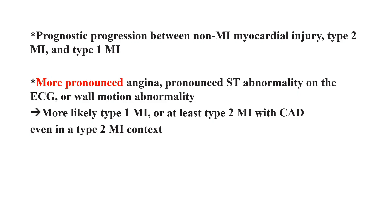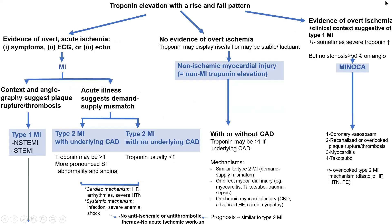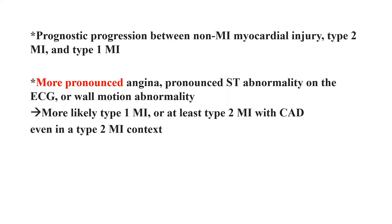Keep in mind there is a prognostic progression between non-MI myocardial injury, type 2 MI with no CAD, type 2 MI with CAD, and type 1 MI — your cardiac prognosis worsens progressively. More pronounced angina, more pronounced ST abnormality, or wall motion abnormality makes type 1 MI more likely, or at least type 2 MI with underlying CAD. If you are thinking type 2 MI but have more pronounced features, reconsider type 1 MI.